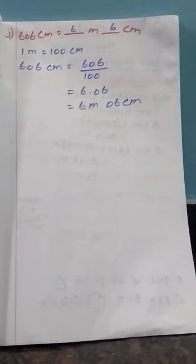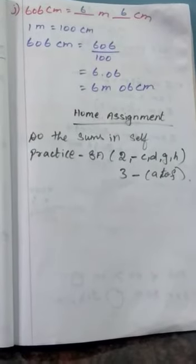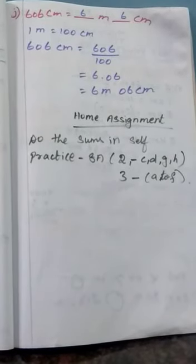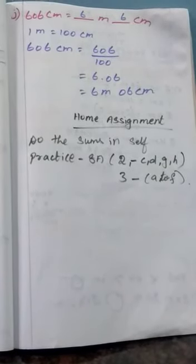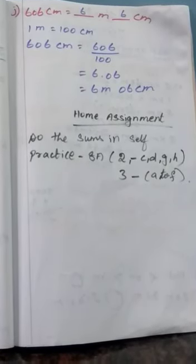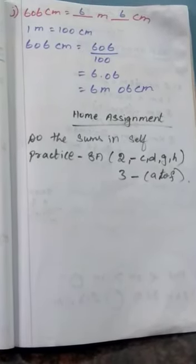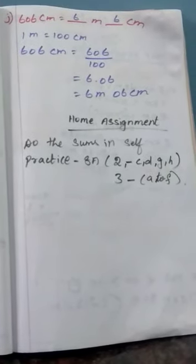I hope you all understand. Today's home assignment: do the sums in Exercise 8A, second row numbers C, D, G and H, and third row numbers A to F. Thank you children, thank you all.